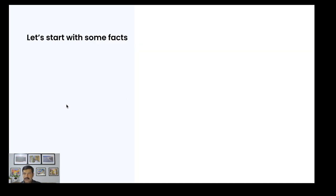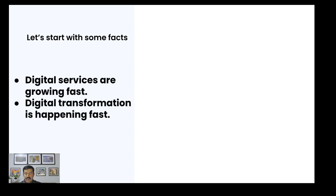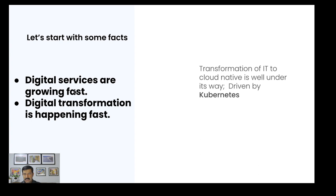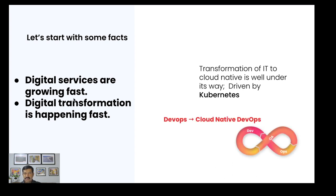Let's start with some facts around IT today. Digital services are growing fast and digital traffic is growing at an alarming rate, fueled by digital transformation. One of the reasons this transformation is happening at this rate is the enablement given by Kubernetes. This transformation of IT into the digital world is fueled by Kubernetes adoption, and it is causing a change in DevOps as well — what we call cloud-native DevOps, which is faster, more automated, with new tooling for configuration, upgrades, and overall delivery.